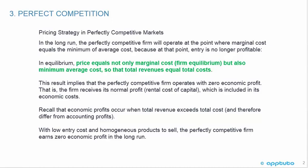This result implies that the perfectly competitive firm operates with zero economic profit. That is, the firm receives its normal profit — the rental cost of capital — which is included in its economic costs. Recall that economic profit occurs when total revenue exceeds total cost, and therefore differs from accounting profits. With low entry cost and homogenous products, the perfectly competitive firm earns zero economic profit in the long run.